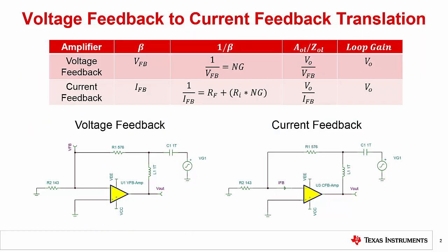The table shown reviews the terminology used for the stability analysis of a voltage feedback amplifier and displays the equivalent terms for a current feedback architecture. The TINA figures shown highlight the circuit needed to obtain the stability curves for each type of amplifier. It is worth noting that the beta factor of a voltage feedback amplifier and current feedback amplifier is not the same.